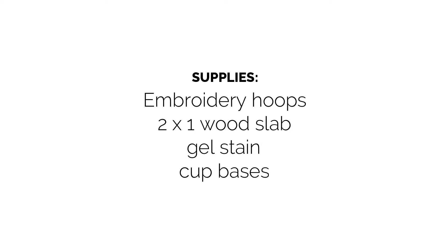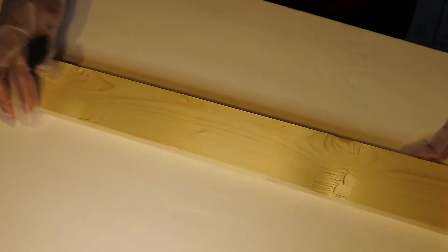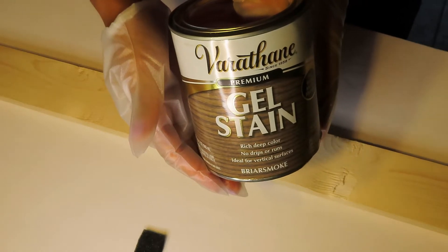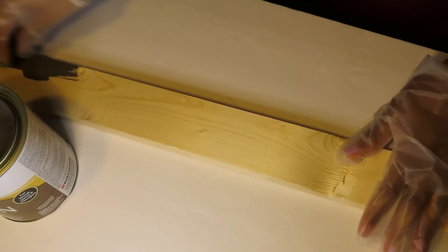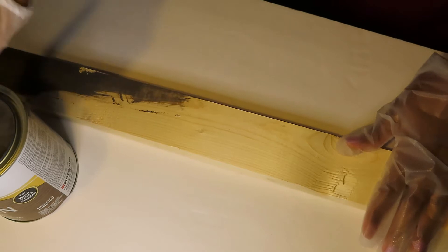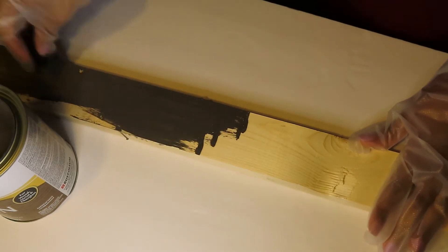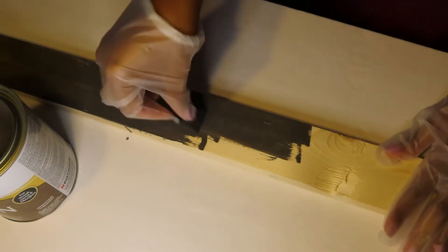Let's get started. I bought this wood slab from Home Depot, a two by one, probably around seven dollars, and I had them cut it for me to size. I also purchased this stain from Home Depot as well.